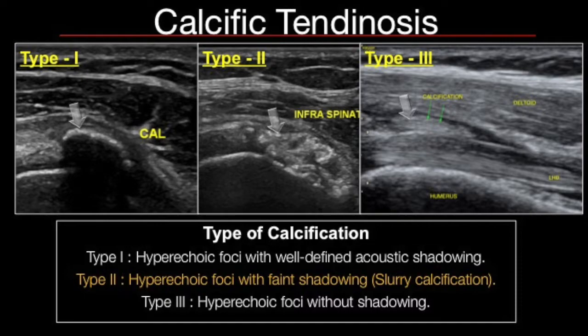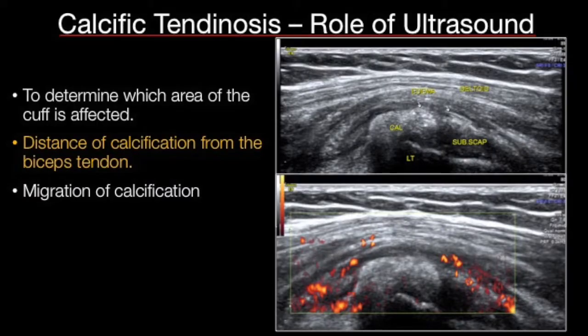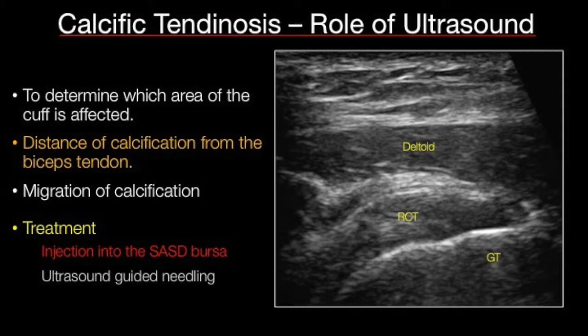Type 3 calcifications are commonly missed on radiographs, so that's where ultrasound is extremely helpful. Ultrasound will help you tell which area of the cuff is involved — is it the supraspinatus, infraspinatus, or only the biceps tendon? You can tell the surgeon how far the calcification is from the biceps tendon, and if there's migration — sometimes calcium along the bursal surface can rupture into the subacromial subdeltoid bursa or biceps tendon sheath — causing intense pain.